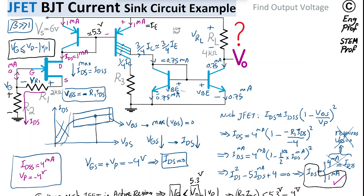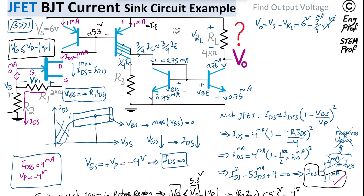The voltage drop across RL is VRL = 0.75 mA × 4 kΩ = 3 V. The output voltage is Vout = supply voltage minus the voltage drop across RL, which gives Vout = 6 V − 3 V = 3 V. The output voltage lands midway between the supply and ground, which confirms the circuit is operating effectively.